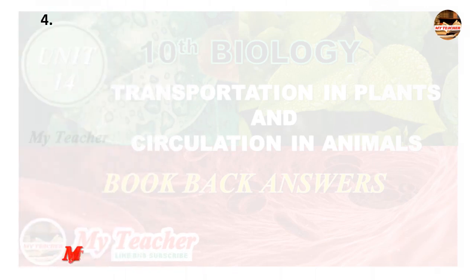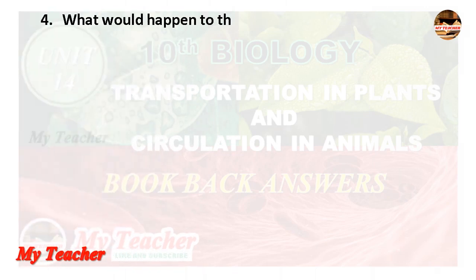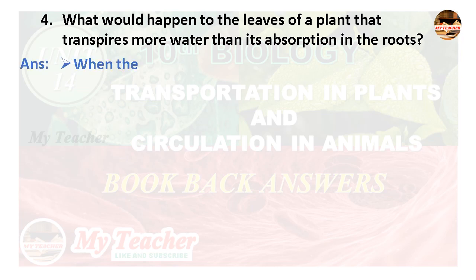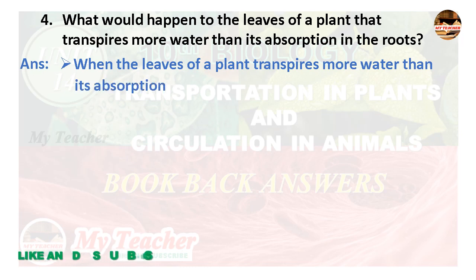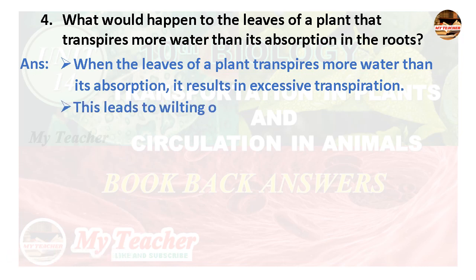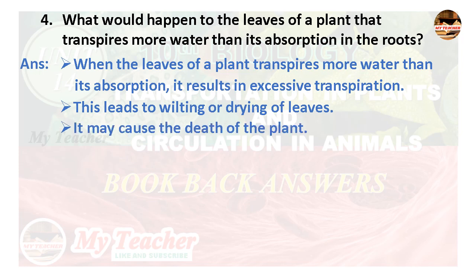Fourth question: What would happen to the leaves of a plant that transpires more water than its roots absorb? Answer: When the leaves of a plant transpire more water than its roots absorb, it results in excessive transpiration. This leads to wilting or drying of leaves and may cause the death of the plant.